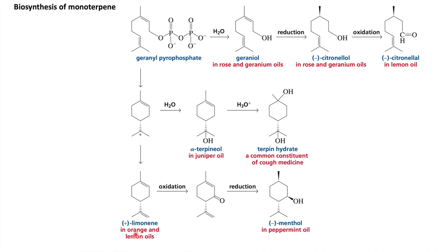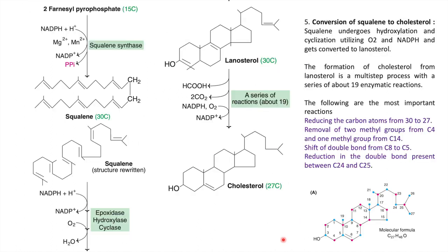From the cyclized intermediate, introduction of a double bond gives limonene, the major component of orange and lemon oil. Oxidation at a carbon followed by reduction gives L-menthol, the major component of peppermint oil. This completes the biosynthesis of monoterpenes from geranyl pyrophosphate.